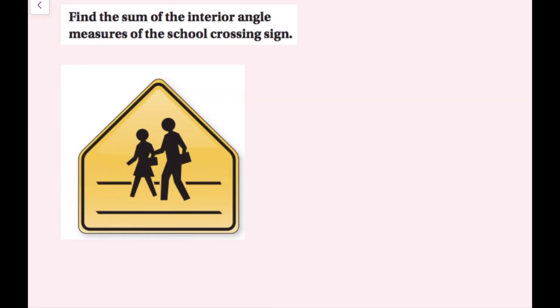Find the sum of the interior angle measures of the school crossing sign. There are actually two ways to do this. One way is to just count the sides: 1, 2, 3, 4, 5 sides. So this is a pentagon.